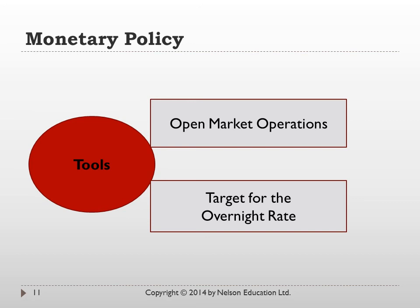Conversely, sometimes the government will sell government securities through the Bank of Canada, creating new investments for investors to purchase. This decreases the money supply — in exchange for currency, the Bank of Canada sells government securities, reducing the amount of money in the M1 and M2 definitions. This slows down the purchase of goods and services, slows down the economy, and acts to decrease price increases or inflation.